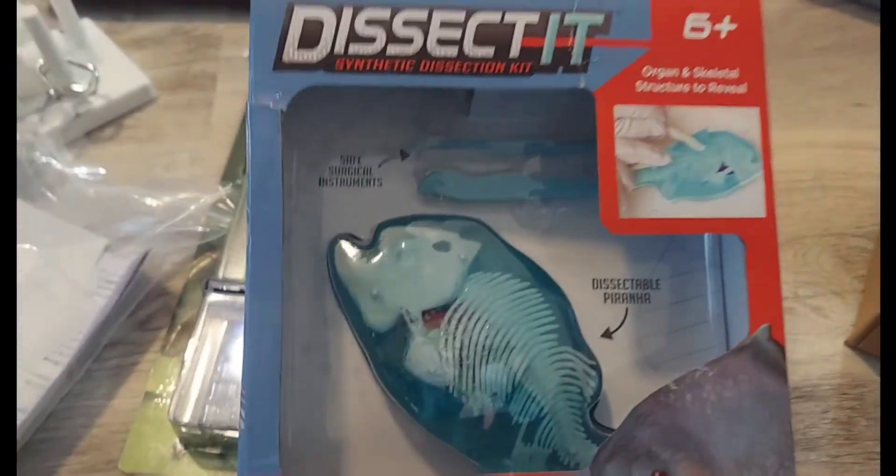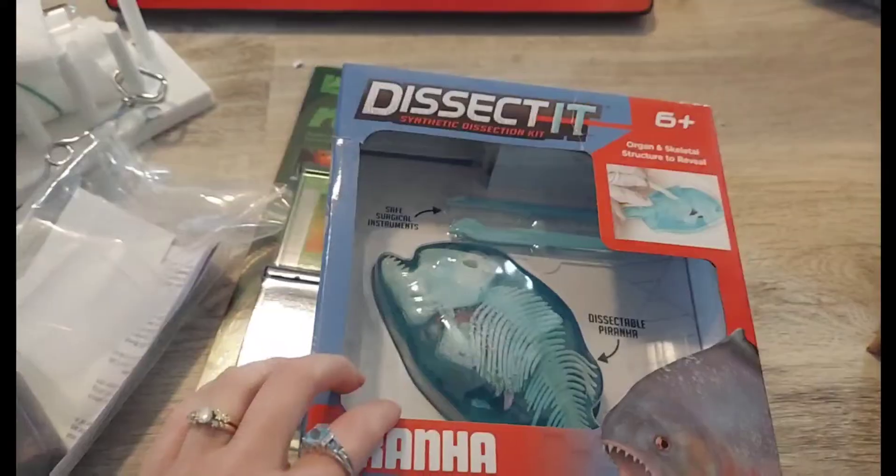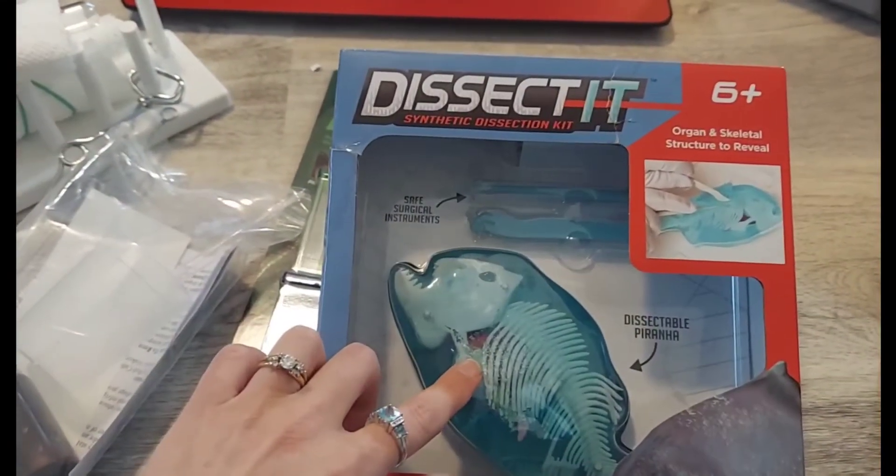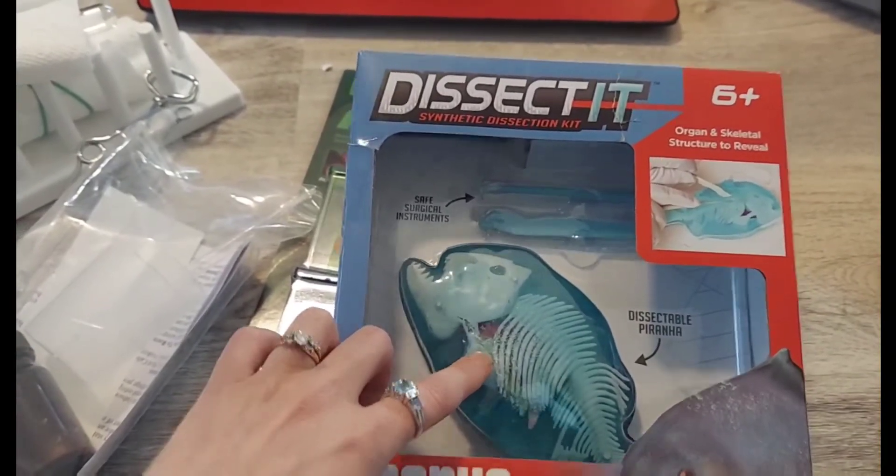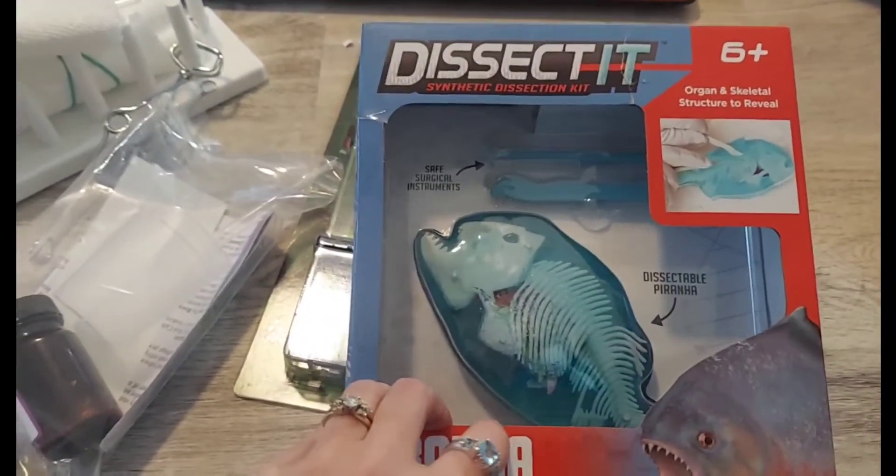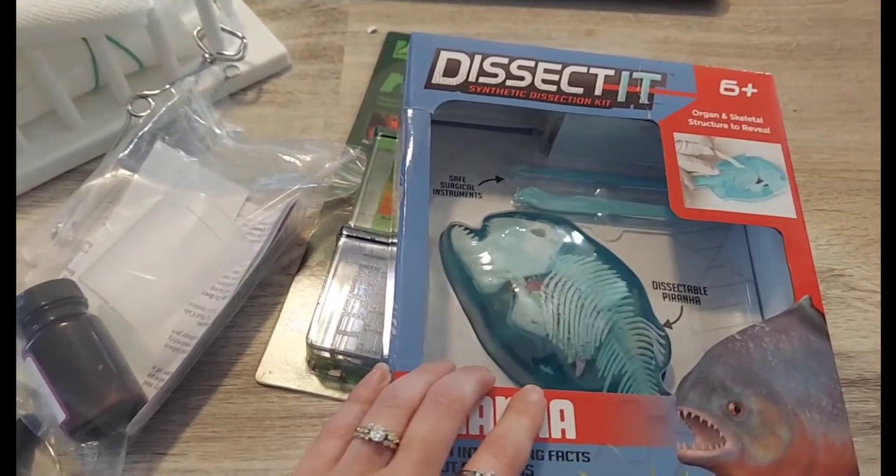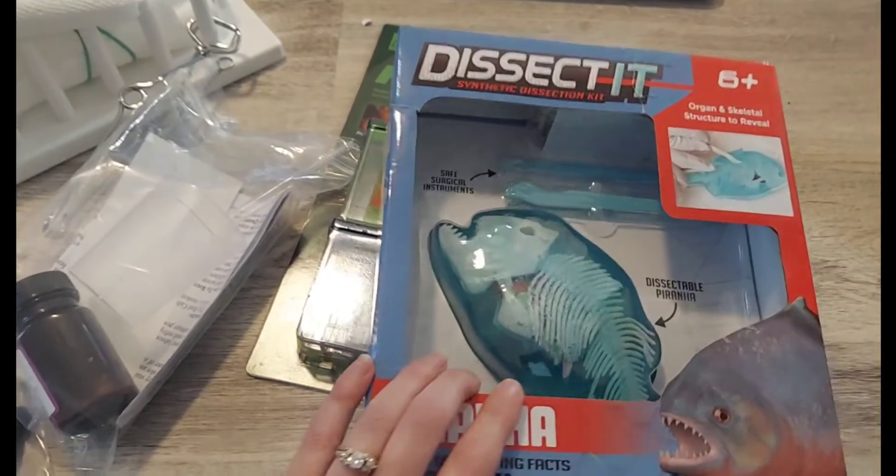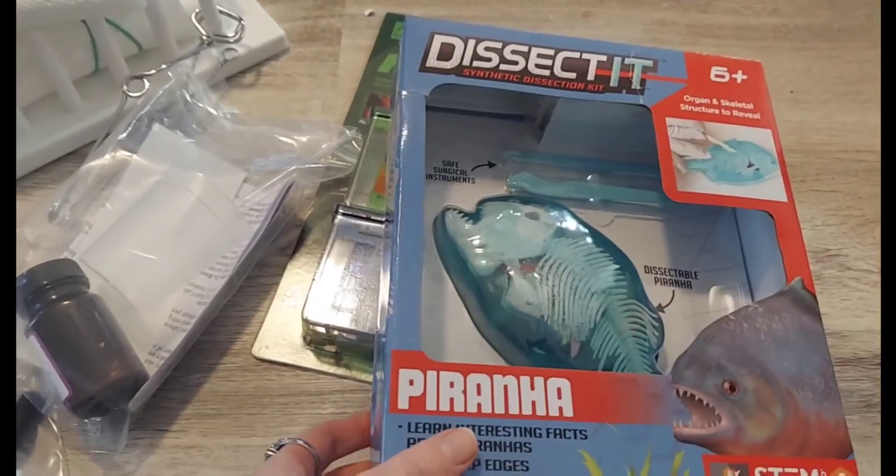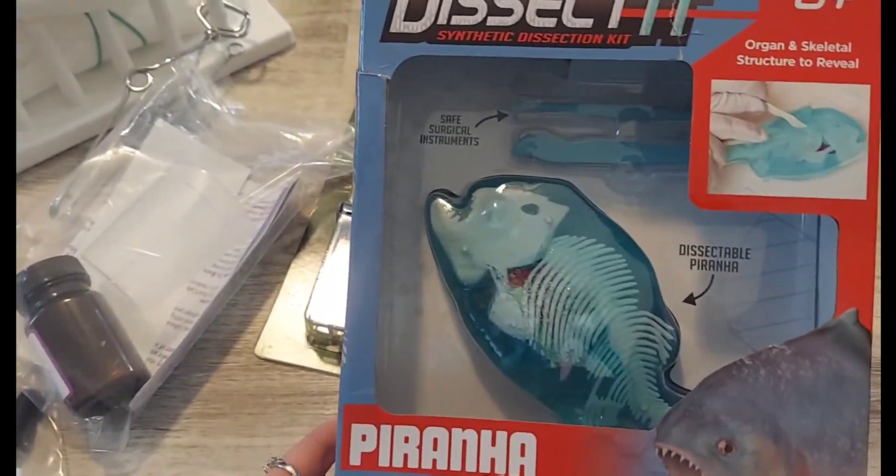And then one thing I've ordered from Amazon in addition to that microscope is this dissection set. I'm going to order several of these. He's going to be using this but he has to dissect different animals and he's also going to be watching YouTube videos on it. He has a love for animals and there's no way he would ever deal with having an animal killed just so he can dissect it. So we're going to go with these fake kits.